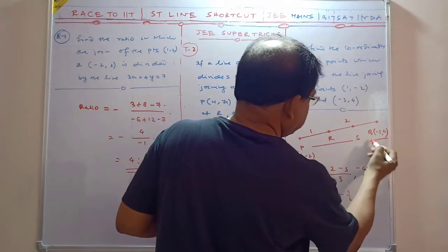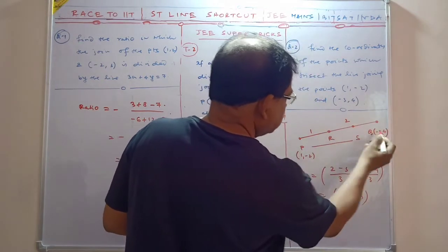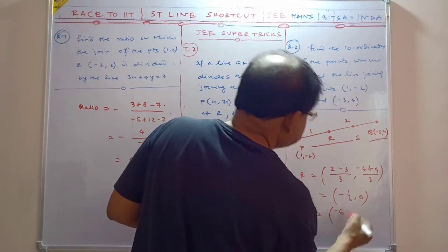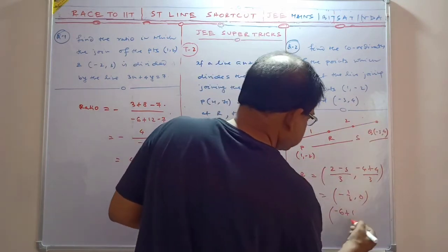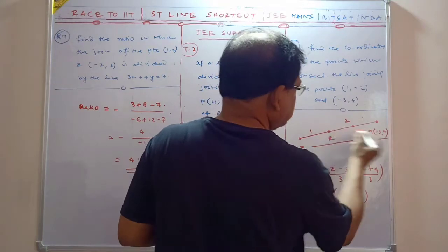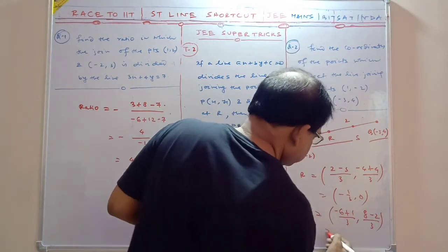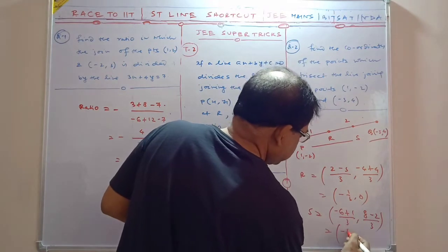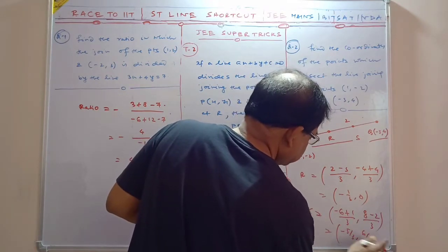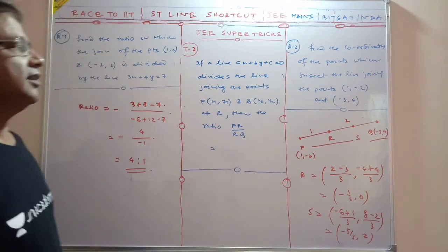So this point's length is 2, and this length is 1. So this is 2 into this, so that is -6 plus 1 into this, so this is by 3. And 2 into this is 8, and 1 minus 2, so that is by 3. So that is what? Minus 5/3, and so this is 6/3, that is 2.